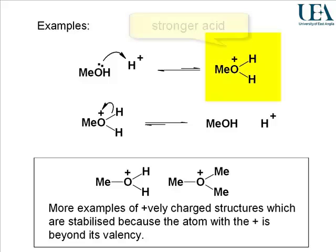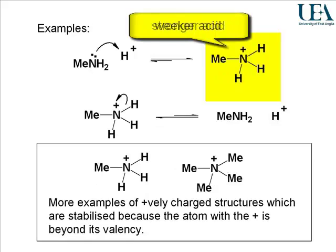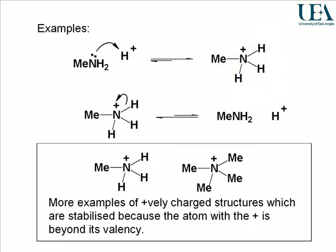This protonated form of methanol is good at giving away protons, more so than this ammonium salt, and therefore it's more acidic. This ammonium salt is less acidic than the oxygen equivalent. And all of that comes from an appreciation of the electronegativity difference between oxygen and nitrogen.